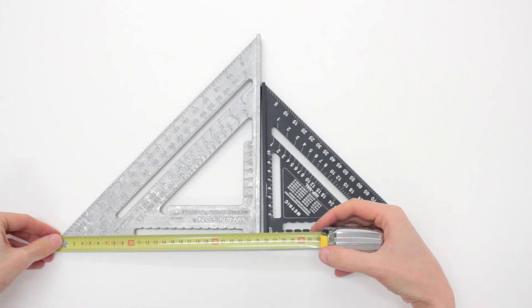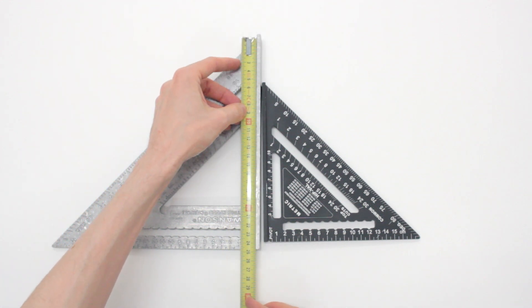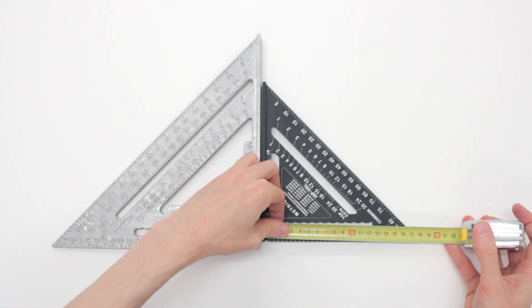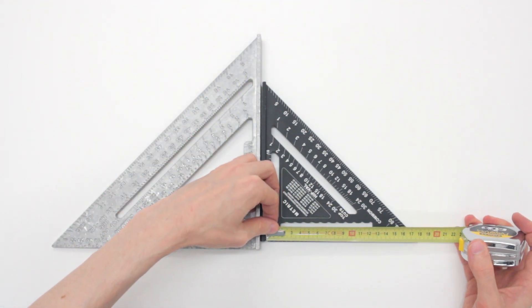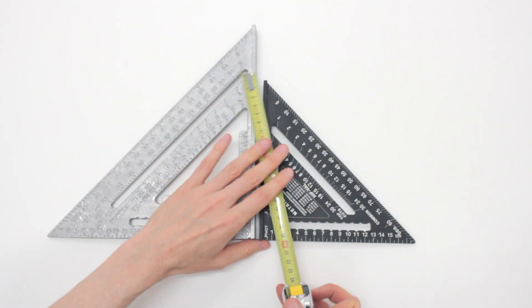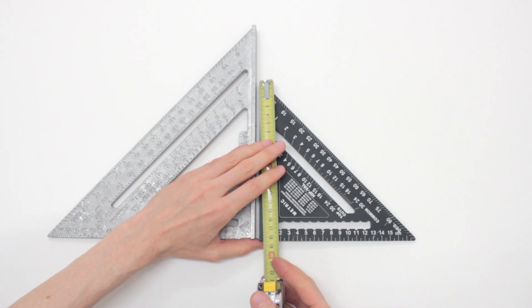So, in centimeters, this one is the Swanson's. It's 25, well, more like 20, 25. The Johnson is like 18. Let me measure it. Well, yeah, 18 and something.